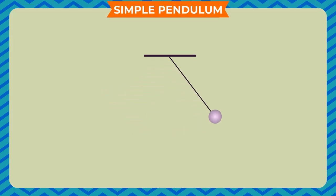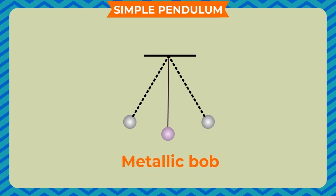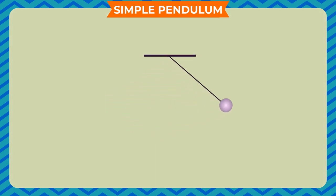Simple Pendulum: A small mass suspended from a fixed point and allowed to swing freely under the influence of gravity is called a pendulum. A simple pendulum consists of a small metallic bob suspended from a rigid stand by a thread as shown in the figure. When the bob of the pendulum is released after taking it slightly to one side, it moves to and fro.